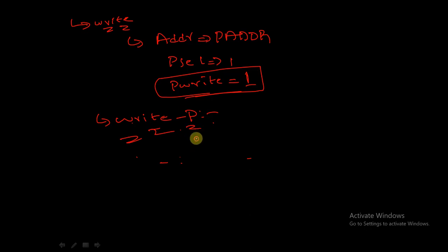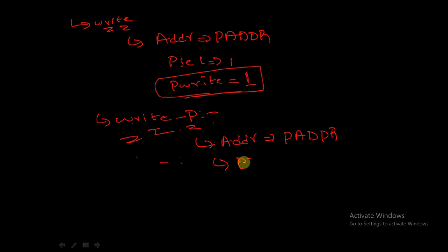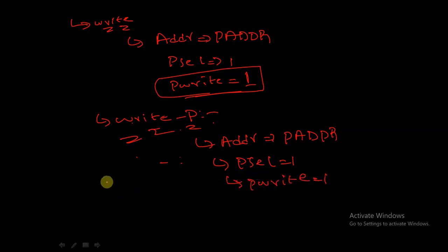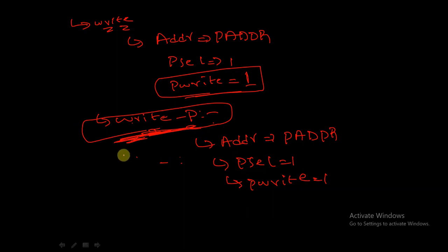Coming to the write underscore P state, during this state the address will be given to P address, the relevant P select signal will be high, and P write will also be equal to 1. In write underscore P state, a wait state is inserted as there must only ever be one pending transfer between the currently performed APB transfer and the currently driven AHB transfer.